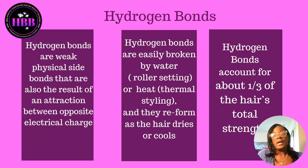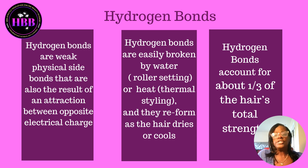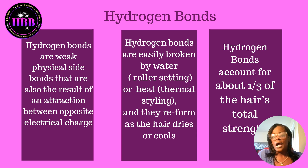Hydrogen bonds are weak physical side bonds that result from an electrical attraction between molecules. They are easily broken by water, roller setting, or heat thermal styling, and they reform as the hair dries or cools. Hydrogen bonds account for about one-third of the hair's total strength.